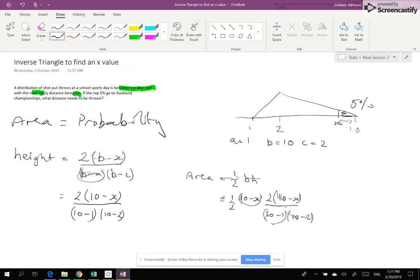Now, I know that area is 5%. So that's 0.05. Now let's look through. I've got a half here, and then I'm timesing by 2. So therefore those bits are going to cancel out.